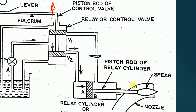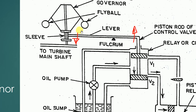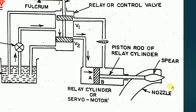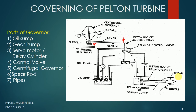As the spear comes back out of the nozzle, more area is available for the flow of water, so more water comes out from the nozzle and impacts the turbine. The turbine speed then increases. So as the speed reduced, the lever adjusted, oil came through V1, the spear came back, the amount of water increased, and the turbine speed increased back toward the set point.